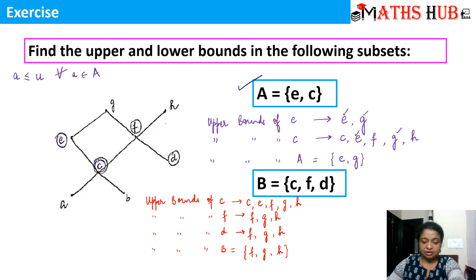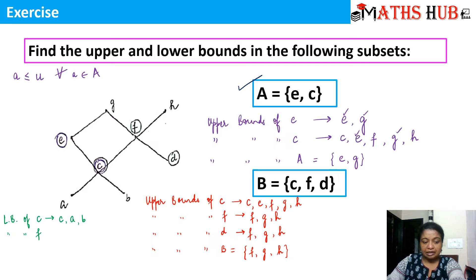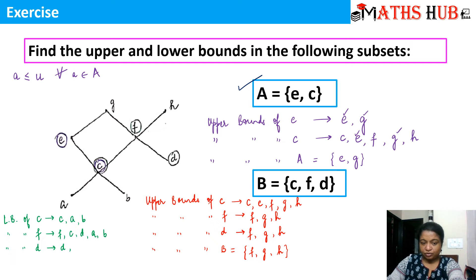Now let's talk about the lower bounds. The lower bounds of c are c, a, and b. The lower bounds of f are f itself, and all elements lying below f: c, d, a, and b — so {f, c, d, a, b}. The lower bounds of d are d itself only. Now for the lower bounds of set B, checking if anything is common in all three — nothing is common. So the lower bound is empty.